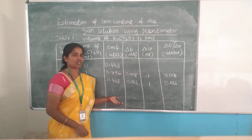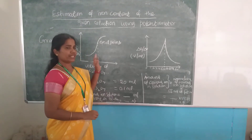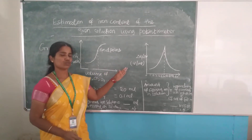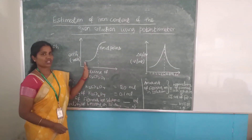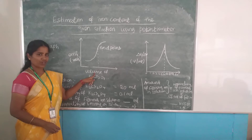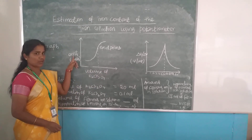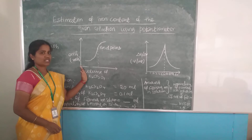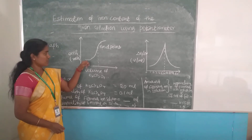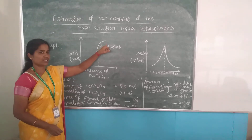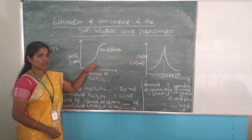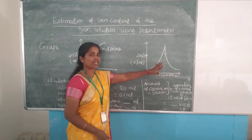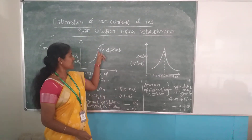Next we will see how to draw the graph. We need to draw two graphs, and using the graph only we can know the accurate end point. The first graph is called the rough graph. Here we are taking volume of potassium dichromate on the x-axis and EMF values on the y-axis. Based on the values we can select the scale. By drawing this graph we can see a sudden increase, which is the end point — this gives us the rough end point.